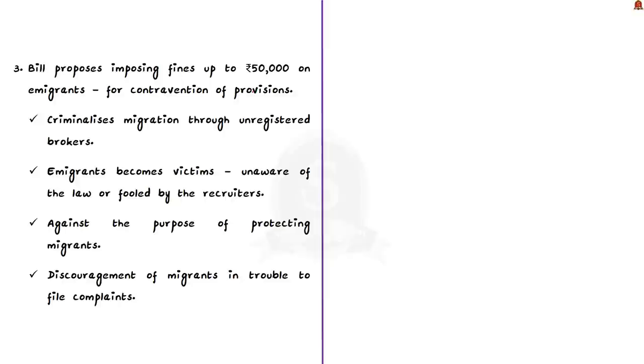The next issue noted by the author is regarding imposing of fines on immigrants. The bill proposes to impose fines up to 50,000 rupees on immigrants if they violate provisions of this bill. This would criminalize migration through unregistered brokers. But the issue is that if the bill penalizes immigrants who are unaware of the law or fooled by recruiters, it goes against the purpose of protecting migrants and their families. Such penal provisions would discourage migrants who are in trouble because they will be afraid to file complaints fearing they could be fined or their passports revoked. It will not create positive reporting behavior in the immigrant.